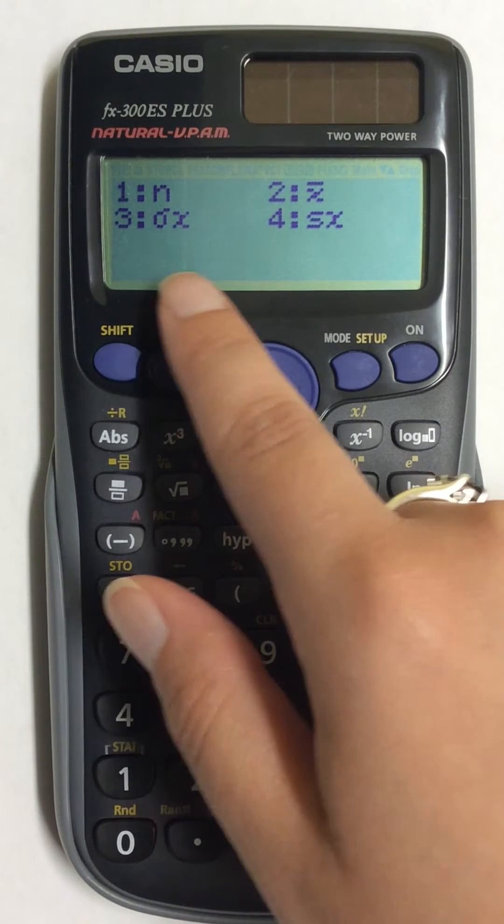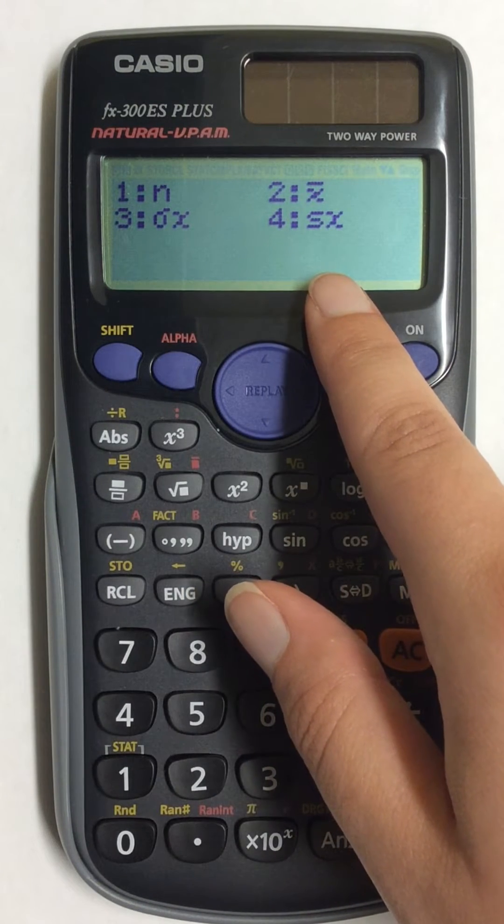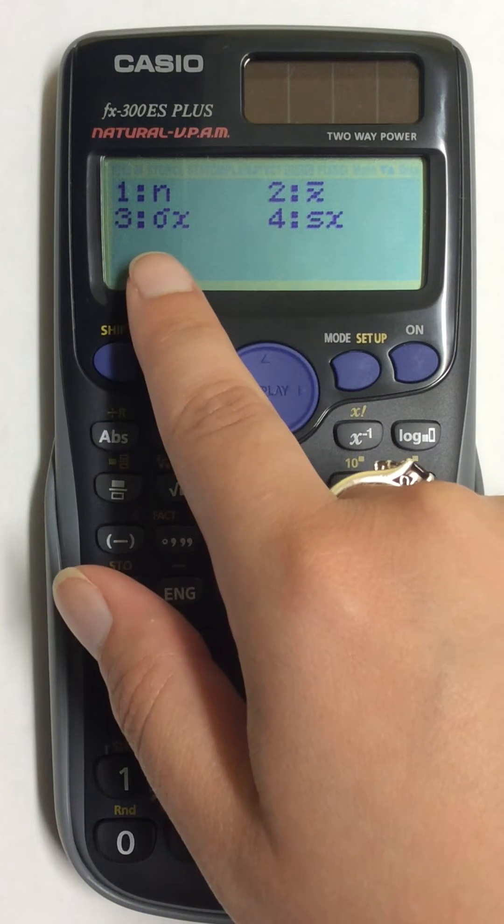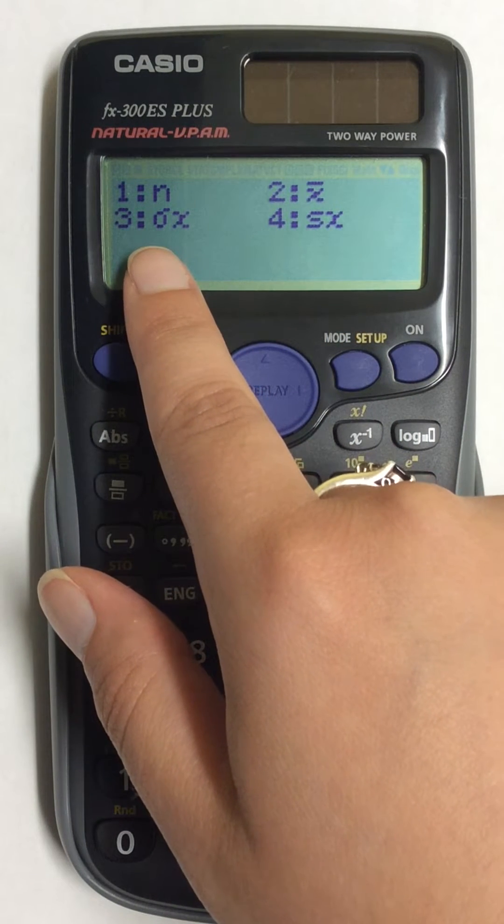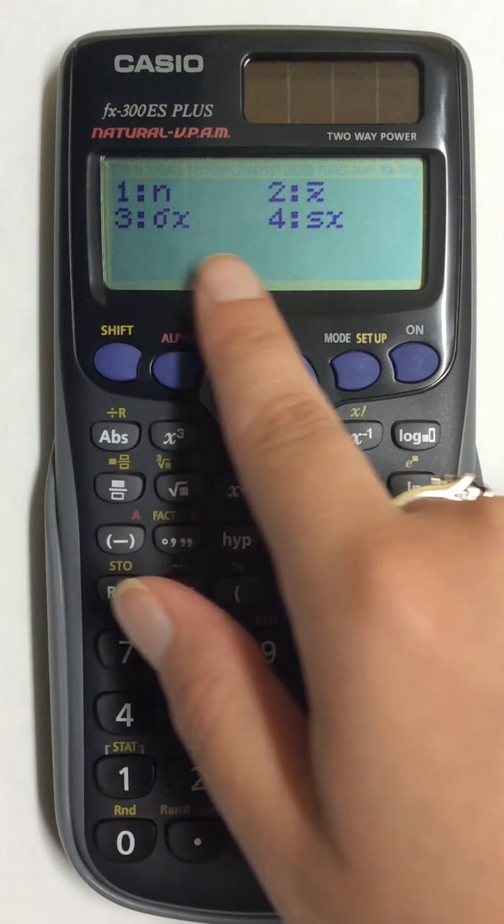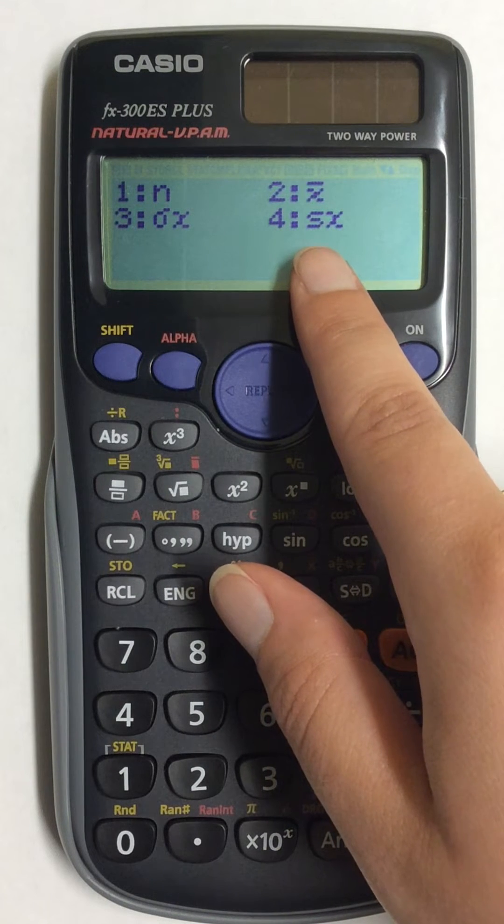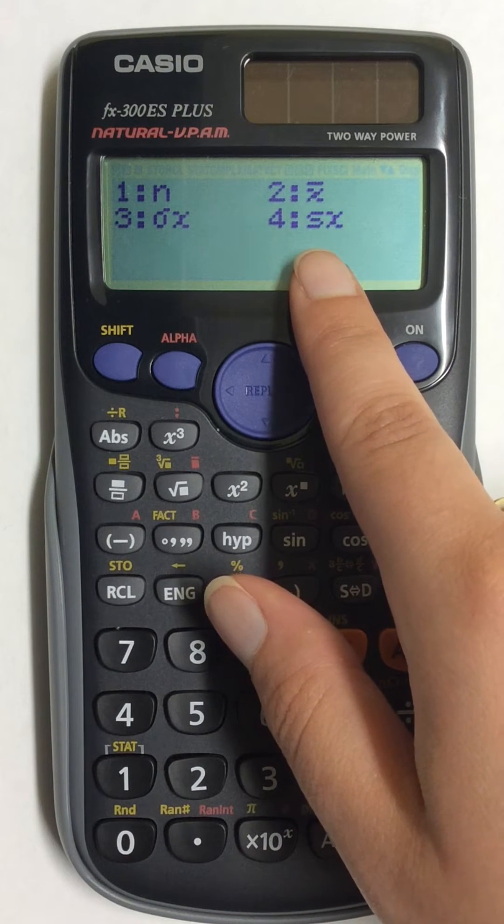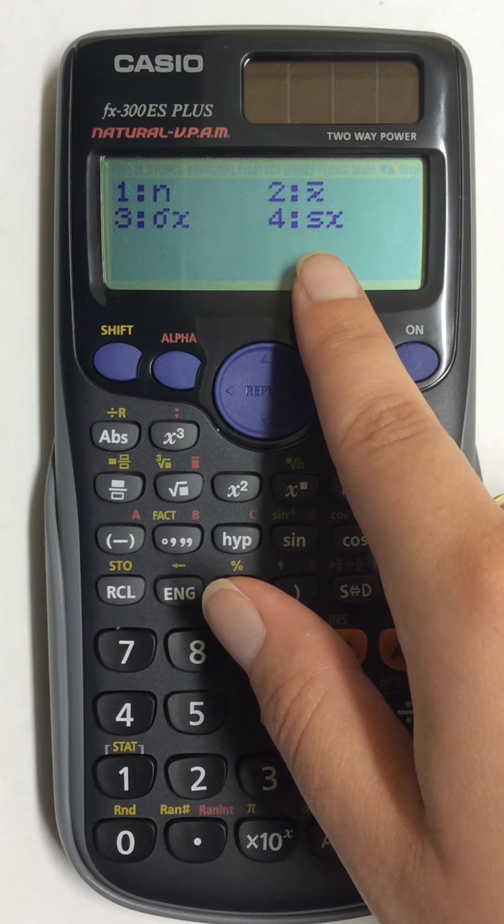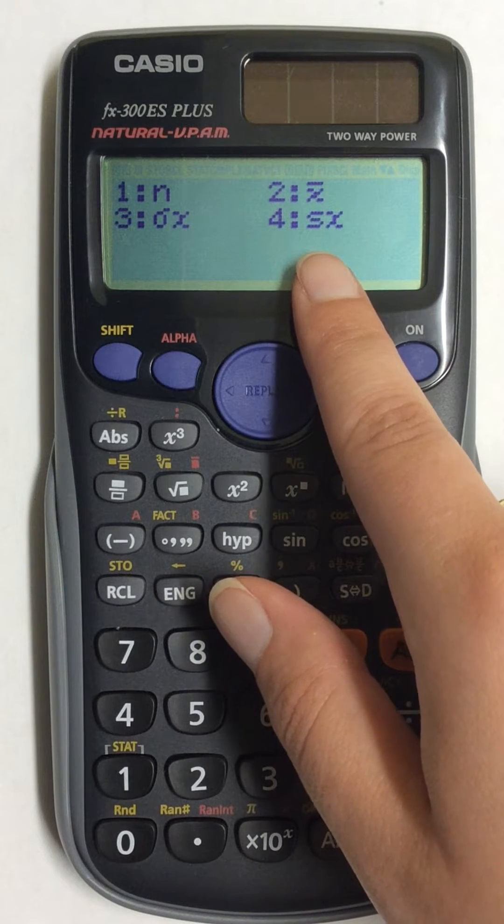On this next screen, it shows me the standard deviation for both population, which is number 3, and for sample, which is number 4. It doesn't give me variance. I need to find that separately.